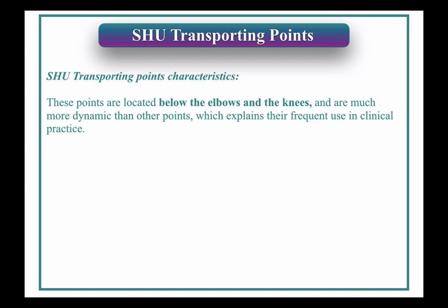So the Shu transporting points — first of all, their characteristics. These points are all located below the elbow and below the knees, so they're much more dynamic points than other points. That's why often in clinical practice we use them frequently. Patients always ask me why there are so many points on the elbows, on the lower leg, on the wrist, ankle, hand, and feet. Those points are so powerful, so we use them a lot.